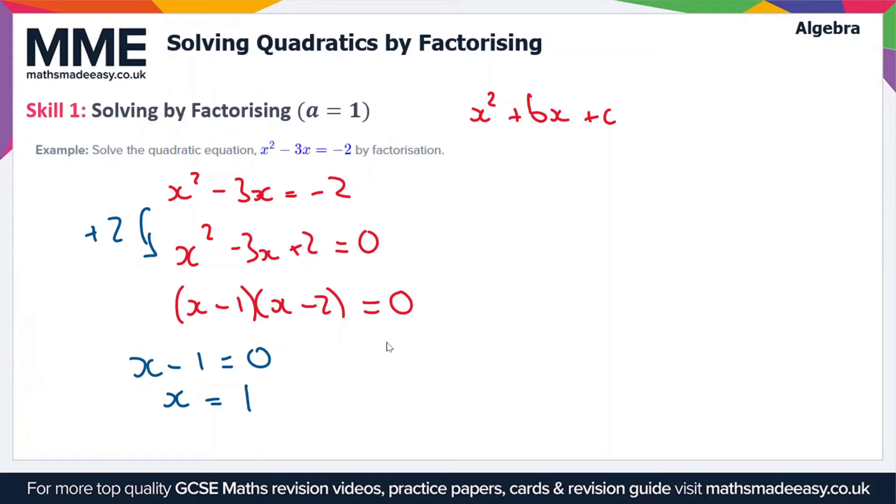If we take the second bracket, x minus 2 equals 0, then we are left with x equals 2. For any quadratic expression, you're always going to end up with two solutions to the equation. So our solutions are x equals 1 and x equals 2.